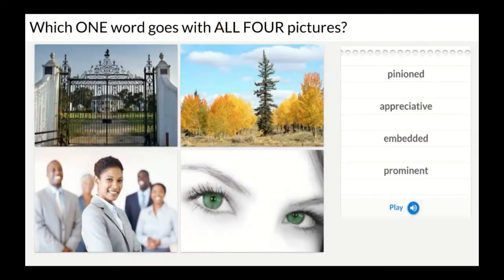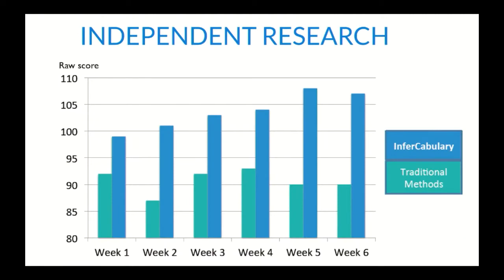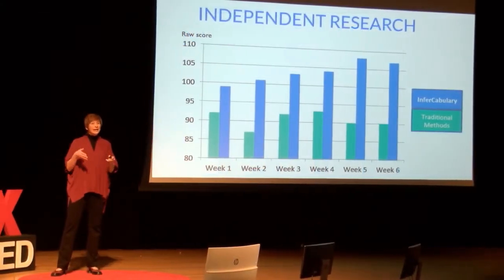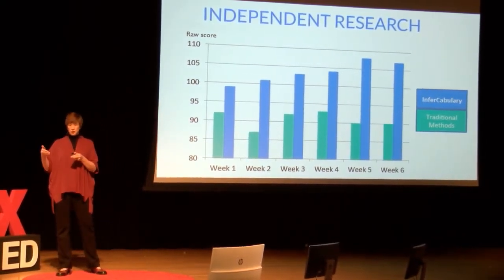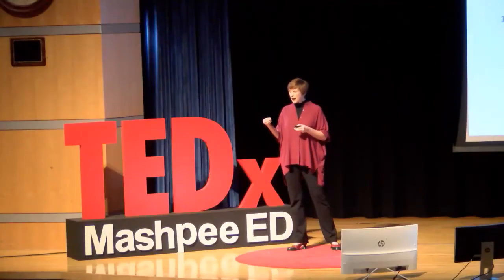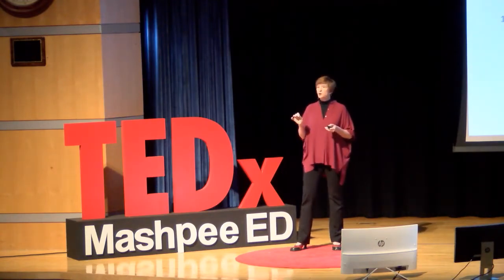This activity asks students to find the common thread among the images using their critical thinking skills, and then choose which one word goes with all four images. In 2015, Dr. Michael Kennedy at the University of Virginia conducted a small study. What he found was students scored far higher the weeks they learned words using semantic reasoning than they did when they used business-as-usual instruction. The reason was that students were far better able to apply their newly gained knowledge of those words to new contexts.